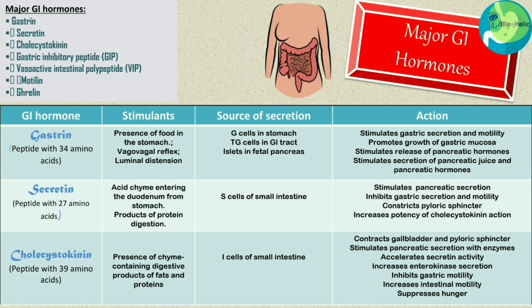Gastrin stimulates gastric secretion and motility, promotes growth of gastric mucosa, stimulates release of pancreatic hormones, and stimulates secretion of pancreatic juice. Secondly, secretin is a peptide with 27 amino acids. Acid chyme entering the duodenum from the stomach stimulates secretin production, and products of protein digestion also stimulate secretin secretion. The source of secretin is the S cells of the small intestine.